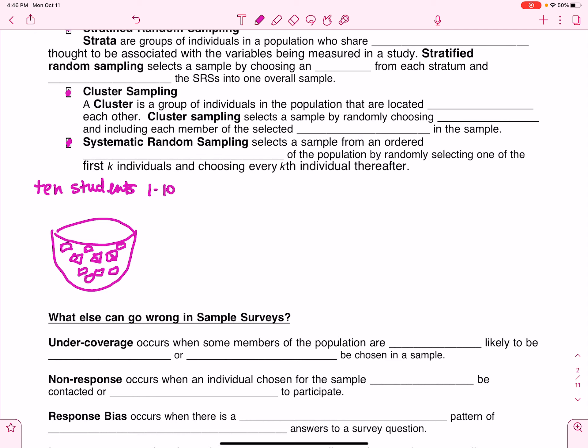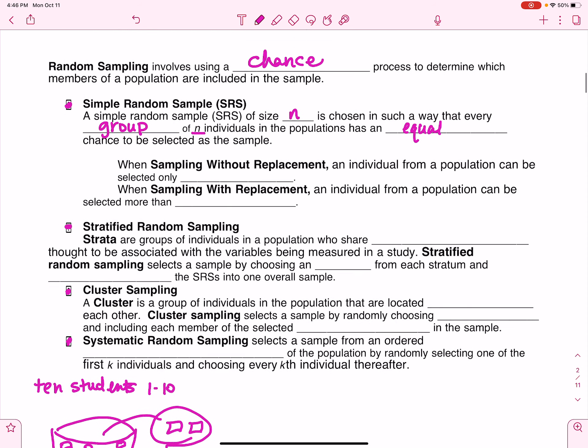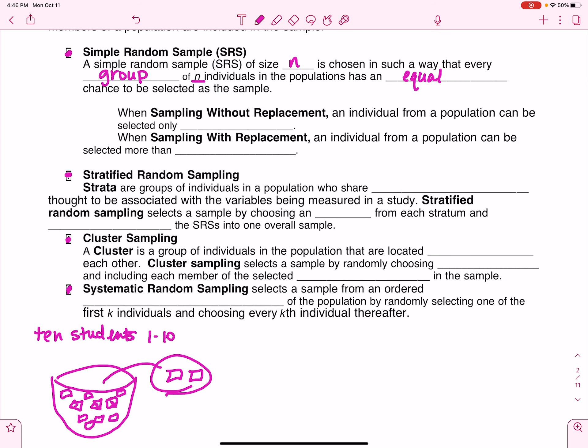And then I pull out two of you to like, you know, get ice cream or something, something magical. So that is a simple random sample because every group of two students has an equal chance of being chosen. So that's why it's called a simple random sample. Everybody's name goes in a bowl, you mix it up, you pull them out, life is good.